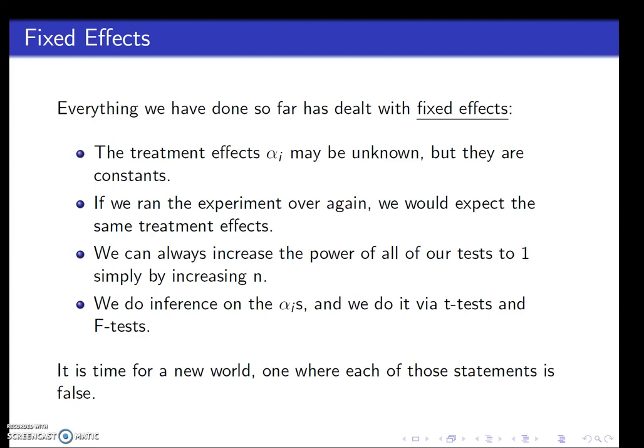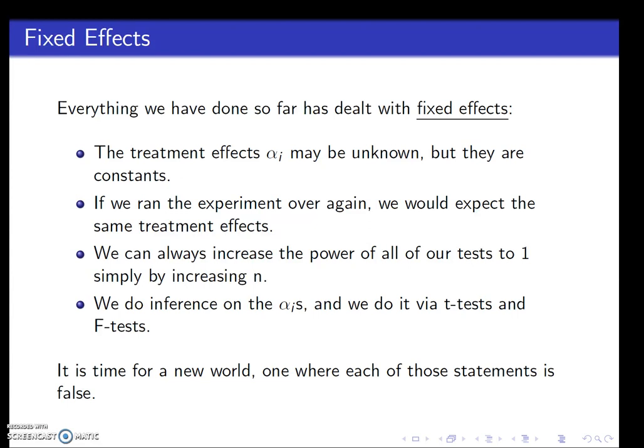We can make inference on the alphas, those fixed effects, and we can do that by the F-test or the T-test. All of this we've been assuming up until now. And now we're going to start talking about random effects where each of these statements is no longer true. So let's talk about why and how.